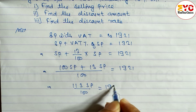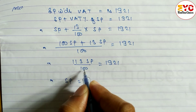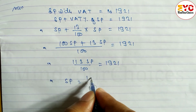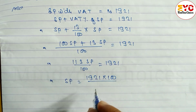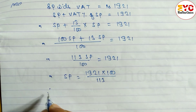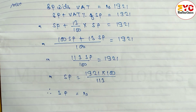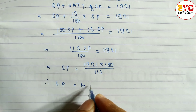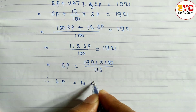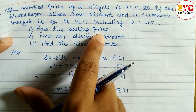So 113SP / 100 = 1921. Now cross multiply: SP = 1921 × 100 / 113. Calculating: 1921 / 113 = 17, so 17 × 100 = 1700. Therefore, selling price = Rs. 1700.